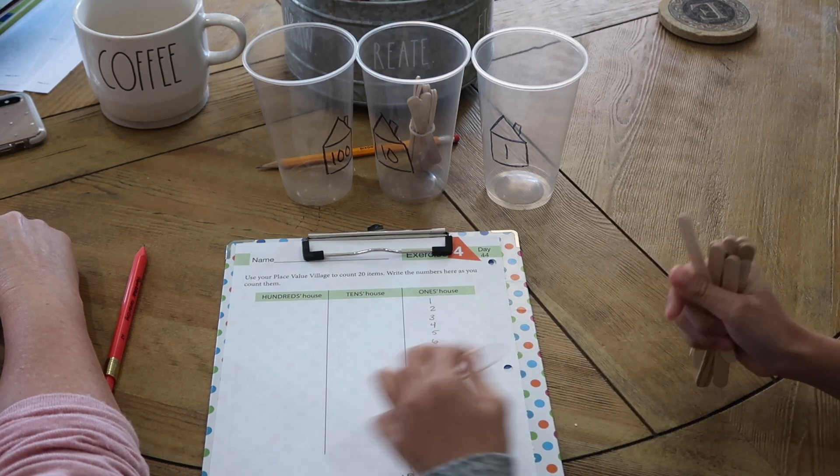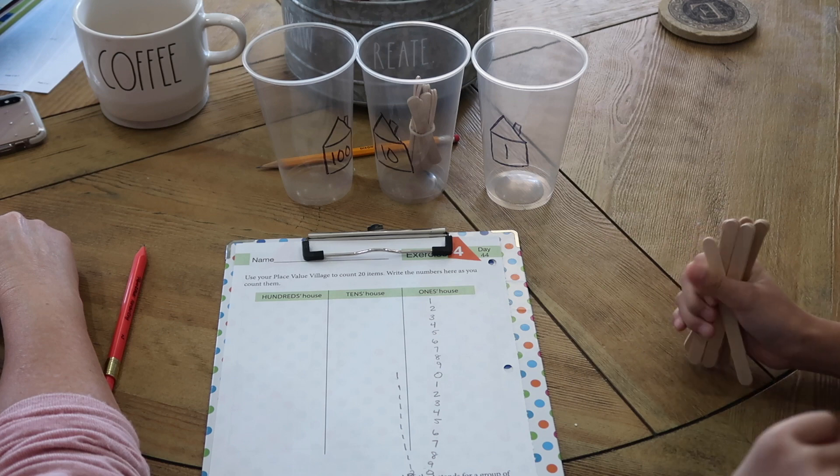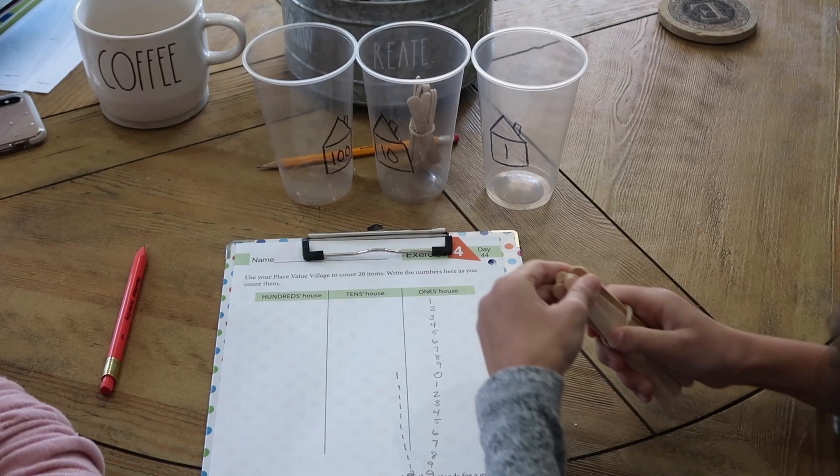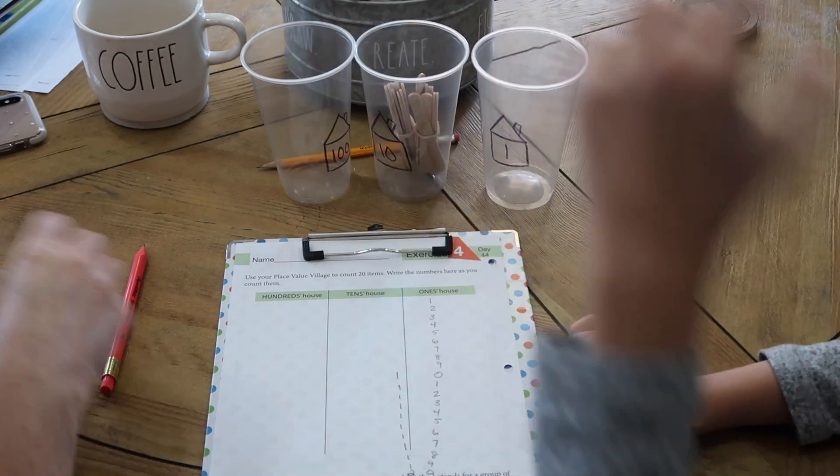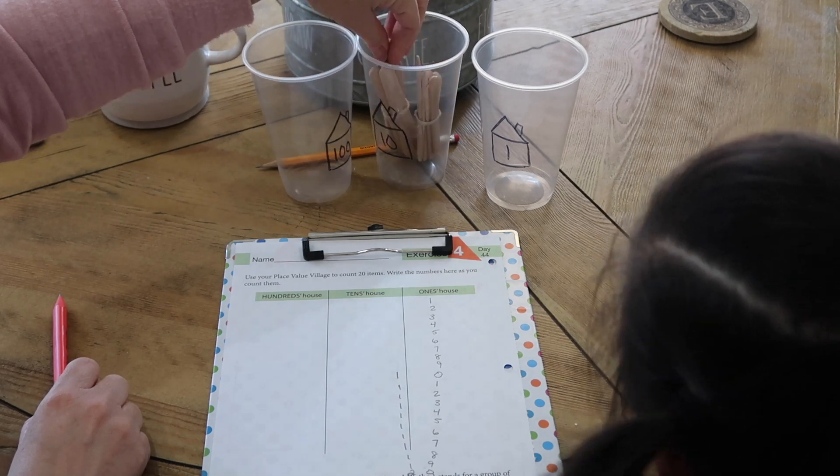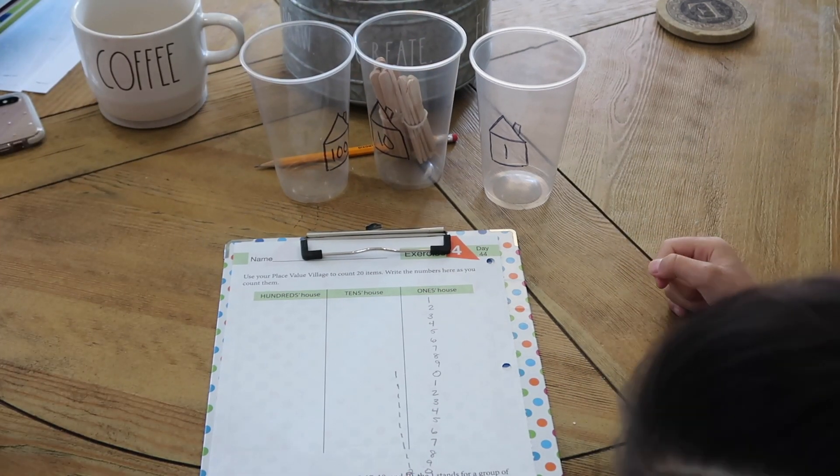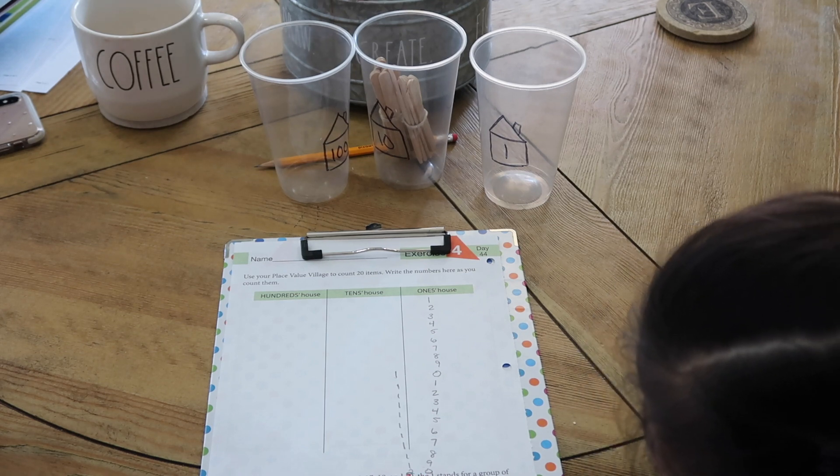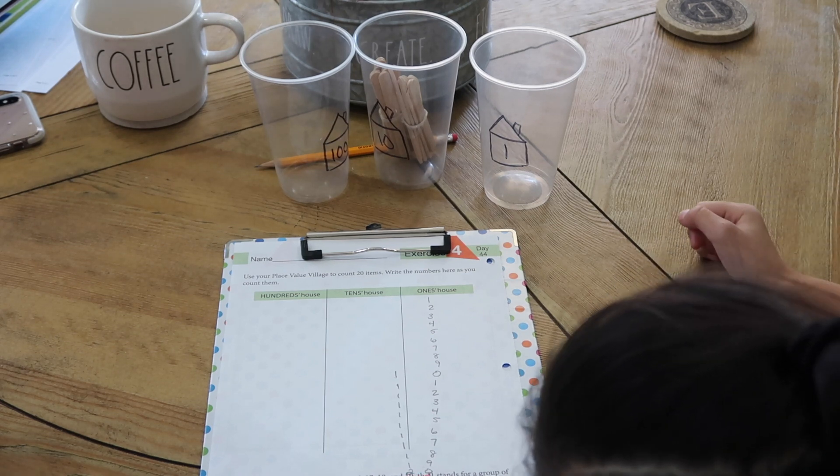Now how many do we have now? We have two groups of ten, so that makes the number what? Twenty. Twenty. Because twenty is two groups of ten and how many ones? None.